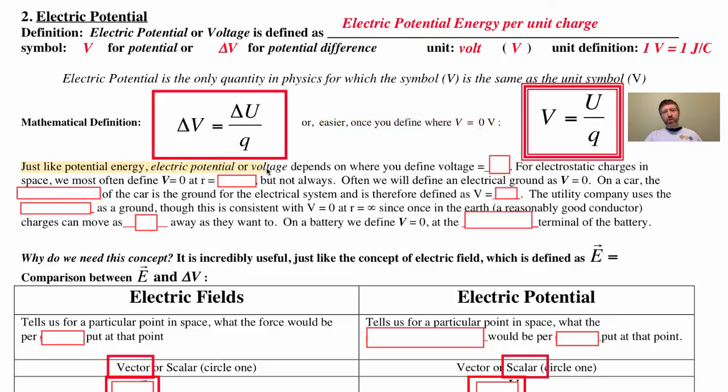Electric potential, or voltage, you could use either one, it depends on where you define the voltage equal to zero. For electrostatic charges in space, we most often define V equal to zero at R equals infinity. But we do not always do that. Often we'll define an electrical ground as V equals zero. On a car, for example, the chassis of the car is defined as V equals zero.